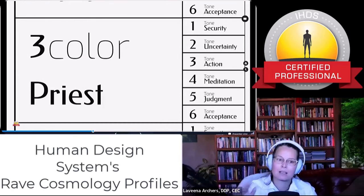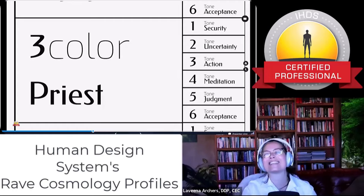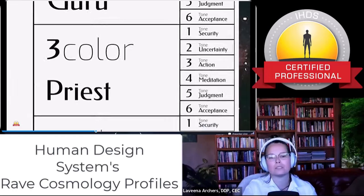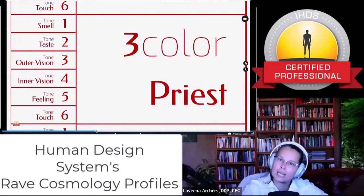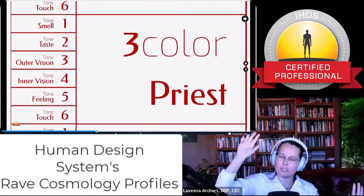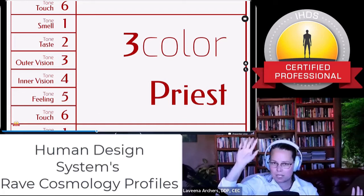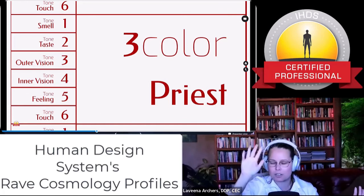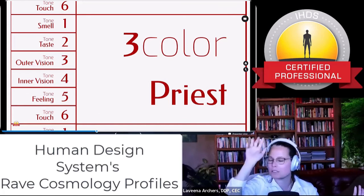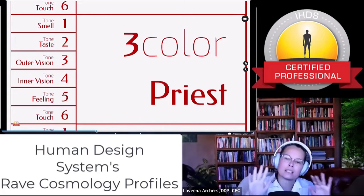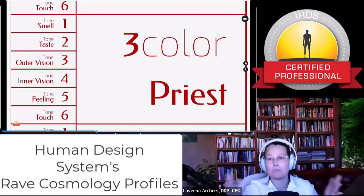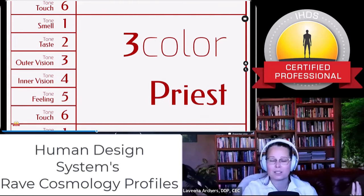And then we have the color on the body side — on the design earth, underneath that five, is a three color again: priest, or priestess. So priestess and priestess underneath that awareness. There are going to be all kinds of different combinations. Underneath we're looking at tonal cognition on the body side — notice it says smell, taste, outer vision, inner vision, feeling, and touch. Each one of these tonal cognitions is the physiological way that one is nourished by information, food, and people — taking in life uniquely. We call that tone.